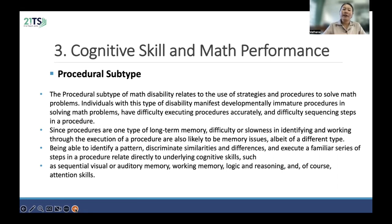Let's move to the second subtype, which is about the procedural subtype. The procedural subtype of math disability relates to the use of strategies and procedures to solve a math problem. Individuals with this type of disability manifest developmentally immature procedures in solving math problems. They have difficulty executing procedures accurately and difficulty sequencing steps in the procedure. Some procedures are not stored in long-term memory, making it difficult to define and work through them. Sequencing of procedures is also likely to be a memory issue, particularly in identifying pattern discrimination or similarity and difference.